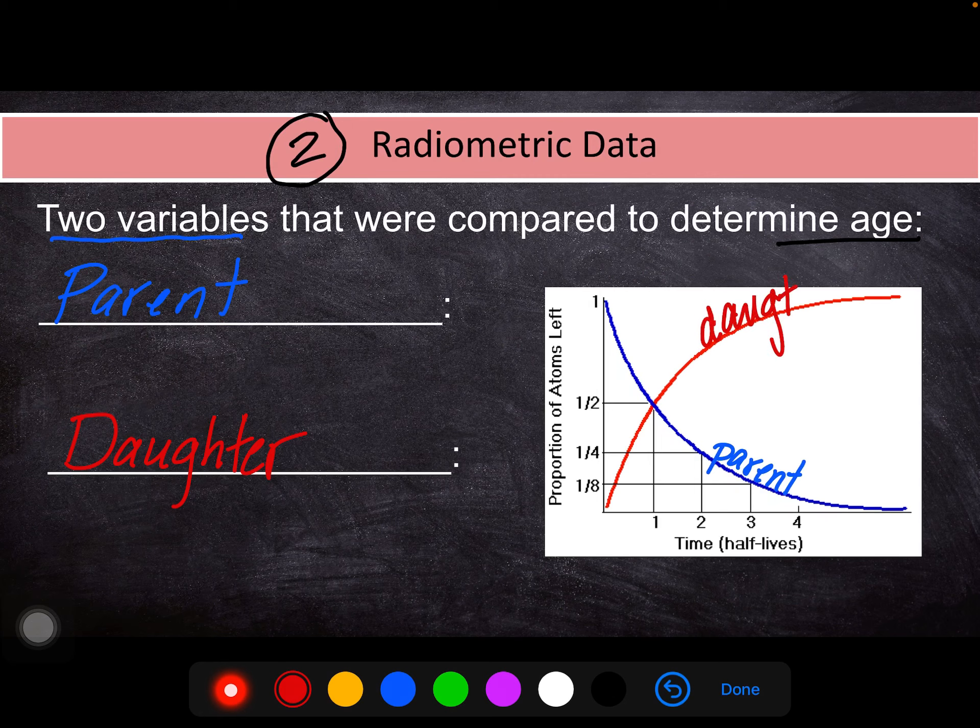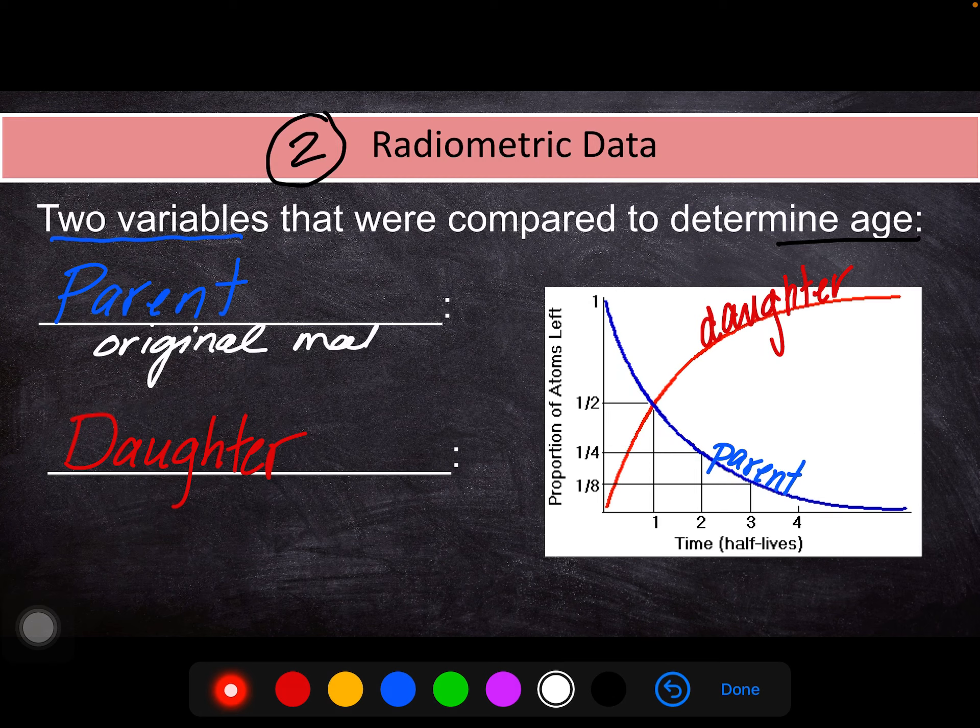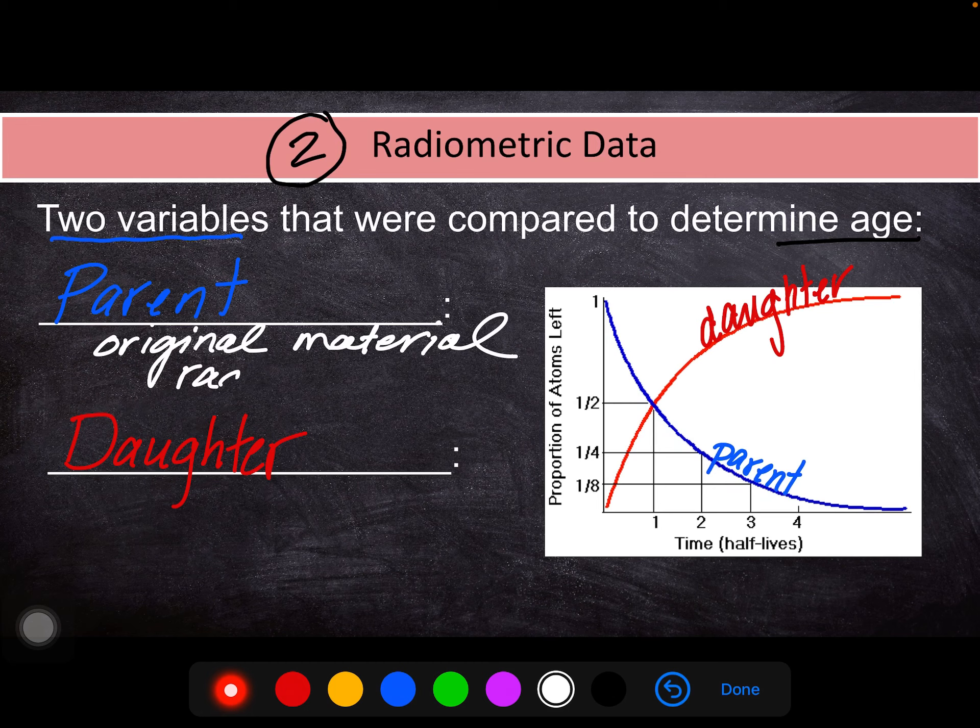And each one of these is what we call an isotope. An isotope is a version of an element that's still the same element, just a little different composition. And so here's the key ideas we wanted to know about these parent and daughters. Parent is what we see in the beginning. It's the original material. And by being original, it is what we call radioactive.